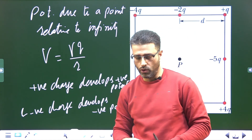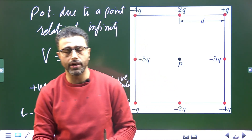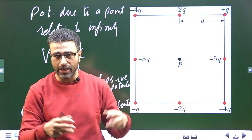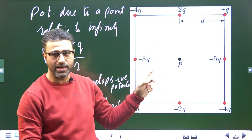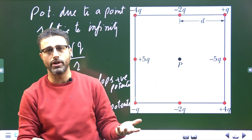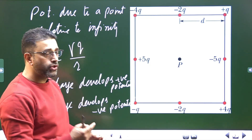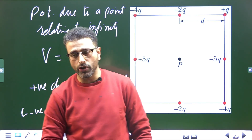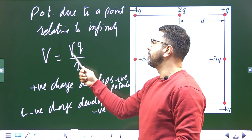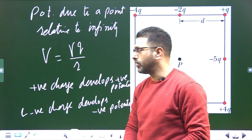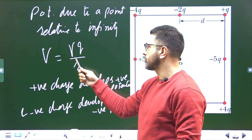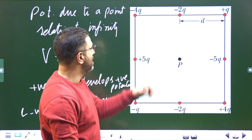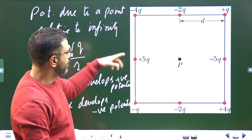Since potential is a scalar quantity, in order to find the net potential at point P we simply have to perform algebraic addition of the potentials of the individual charges — no vector addition, because it is not a vector quantity. Positive charge develops positive potential, negative charge develops negative potential, and the value for potential is gamma Q divided by r, where r is the distance from the charge Q.